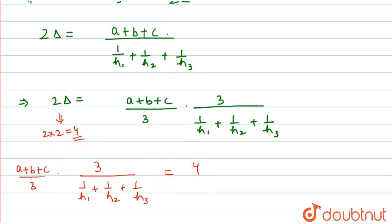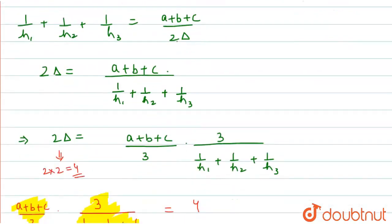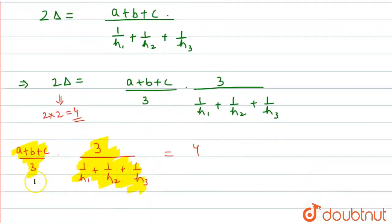So, this is the arithmetic mean of the sides of the triangle, and this is the harmonic mean of the altitudes of the triangle. We have been asked for the product of the arithmetic mean of the length of the sides and the harmonic mean of the length of the altitudes, which equals 4. So, this is the answer. Thank you, students.